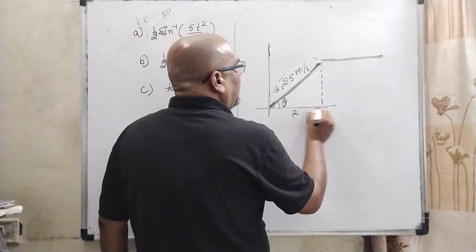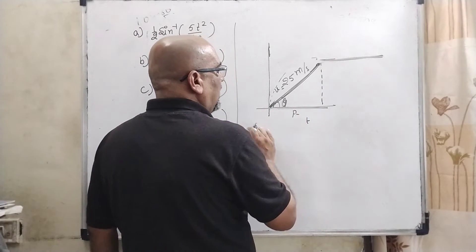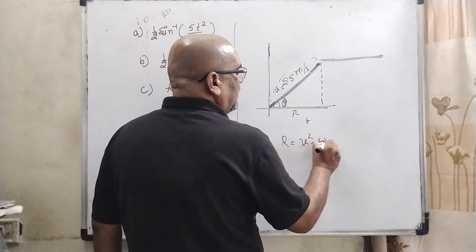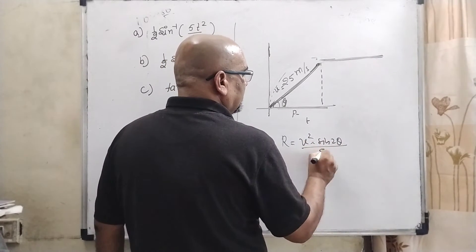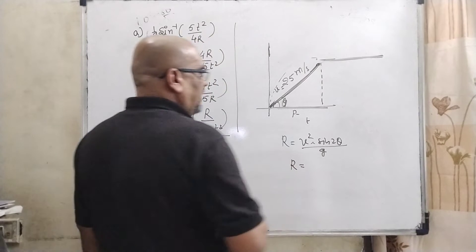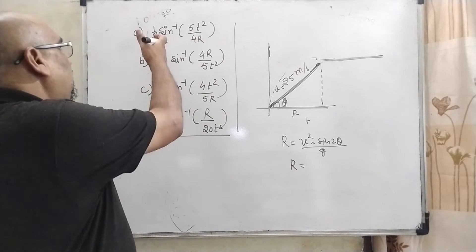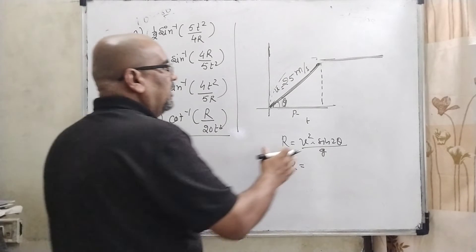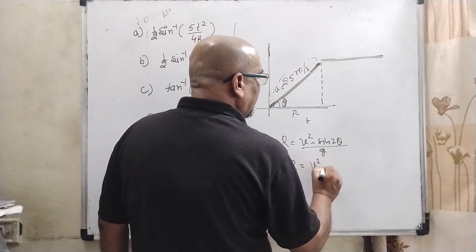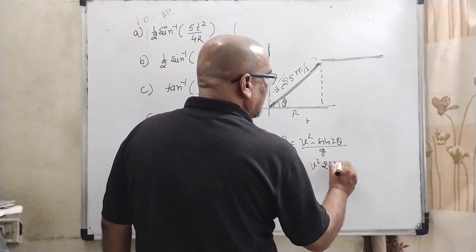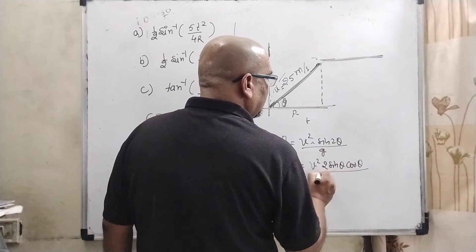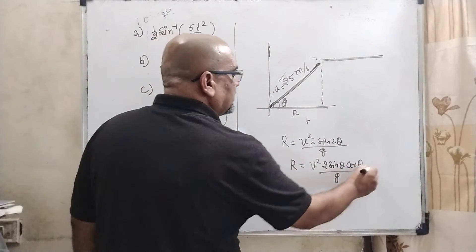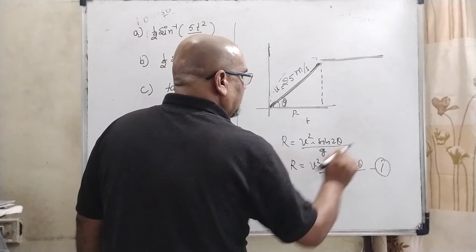Now here the horizontal range is given, that is R. As we know that R = v² sin 2θ / g is the formula. But here you can see that all angles in the options are in the form of sine, tan and cot. So therefore it can be written as v² × 2 sin θ cos θ / g, which is the formula of sine 2θ. So here R equals this, consider equation number first.